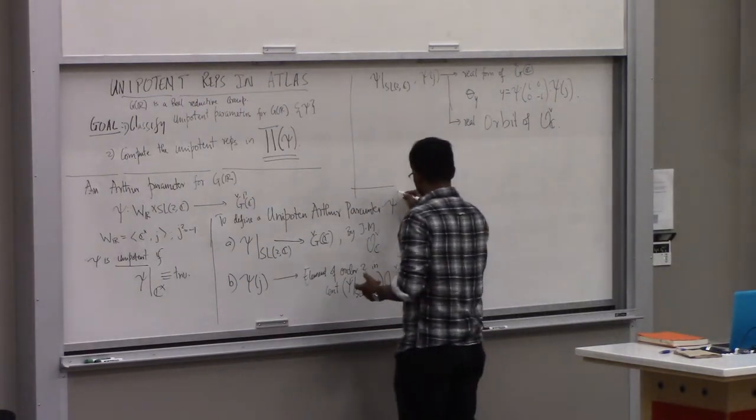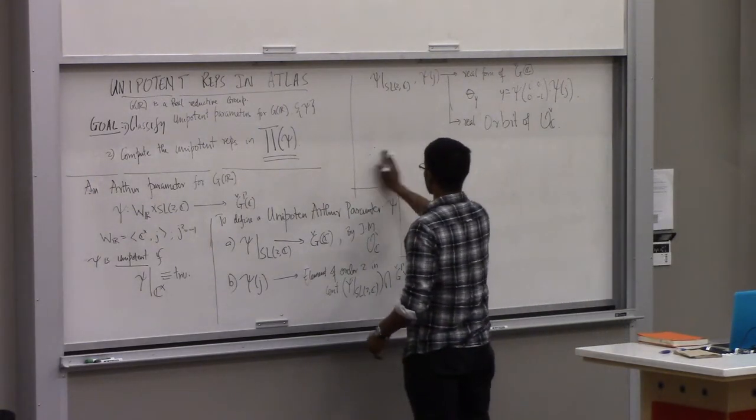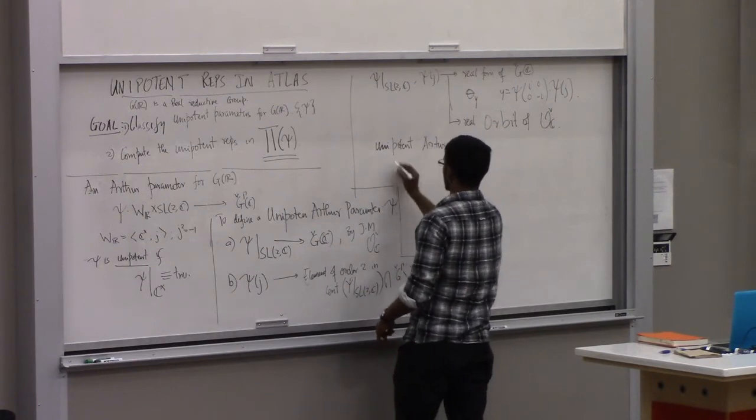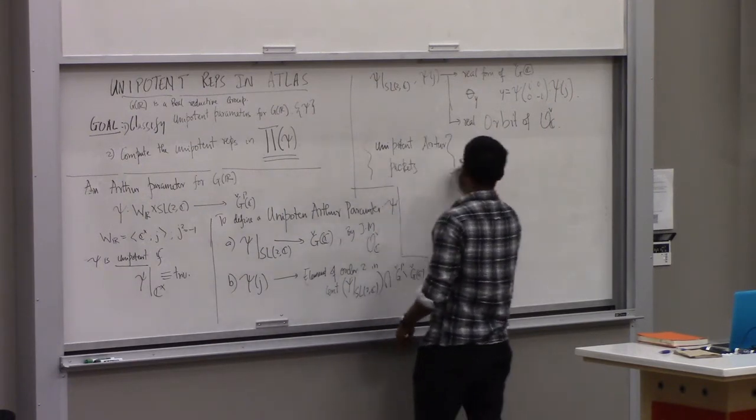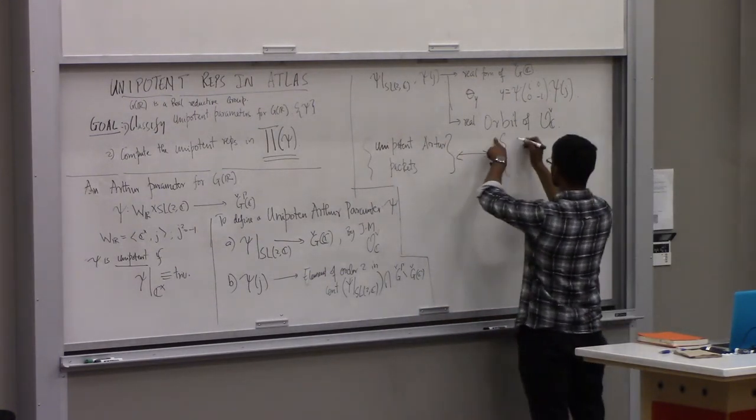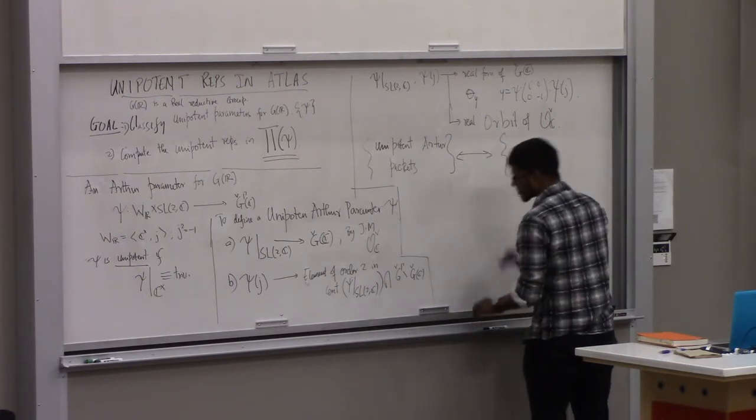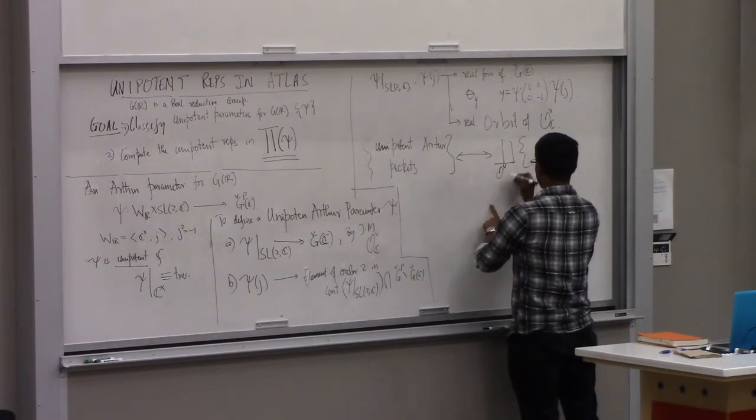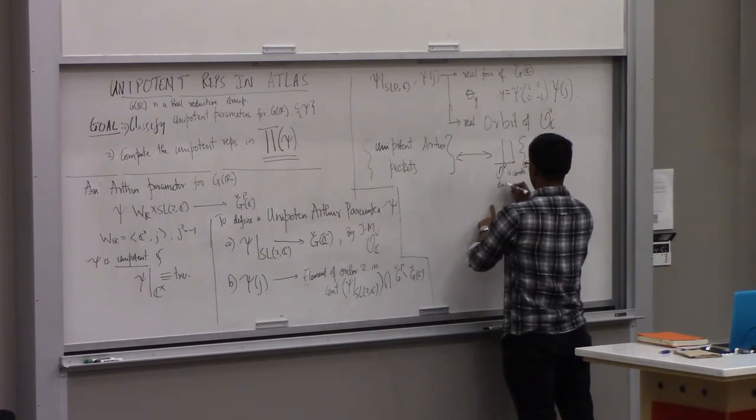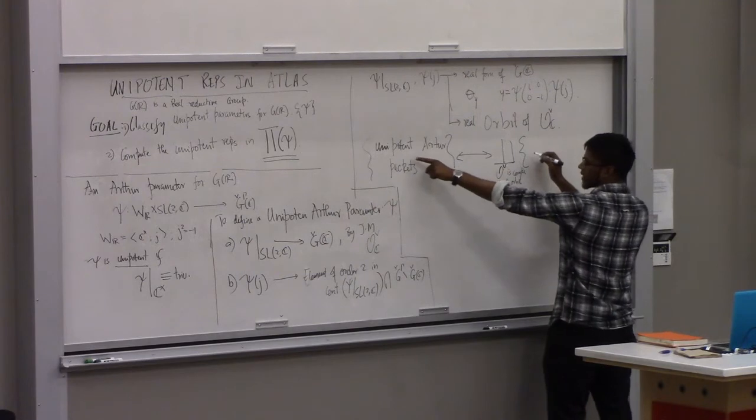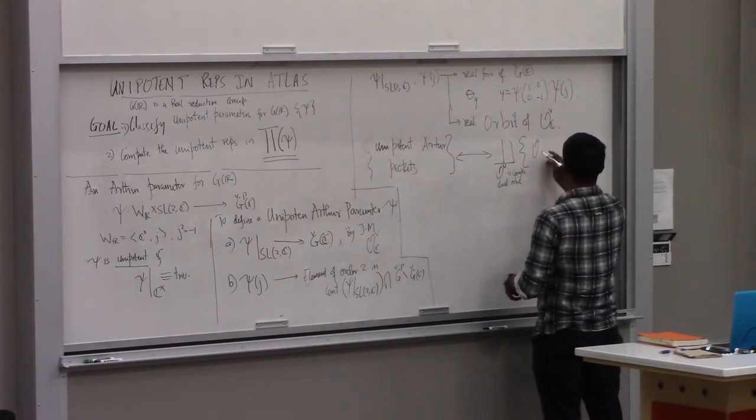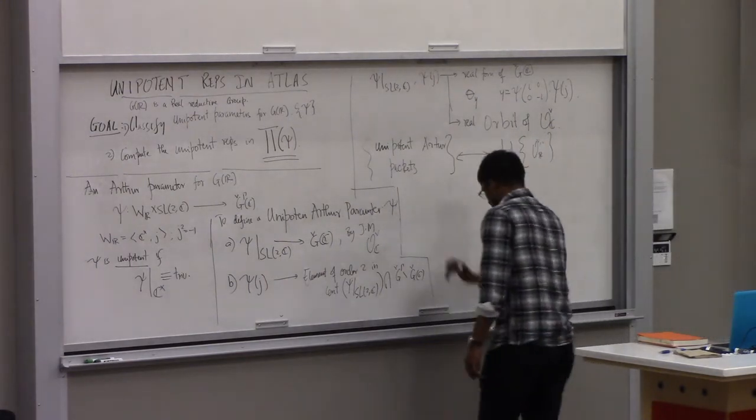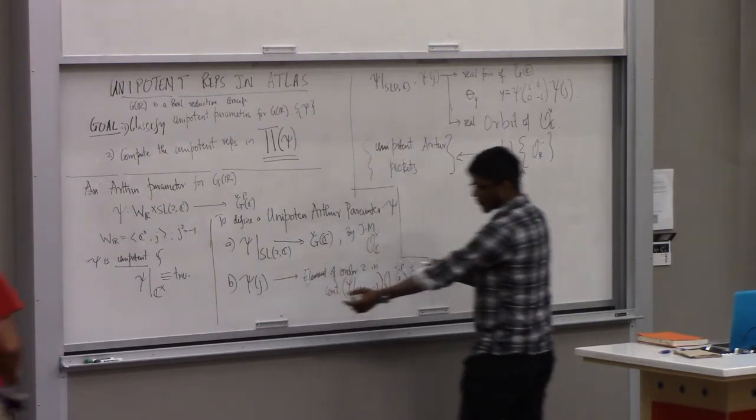Therefore, Arthur packets, unipotent Arthur packets, are going to be in bijection with, as you vary over, so it's going to be a union of, O check is a complex dual orbit, and the unipotent Arthur packets are going to be parametrized by the real orbits of this guy, O check I R.